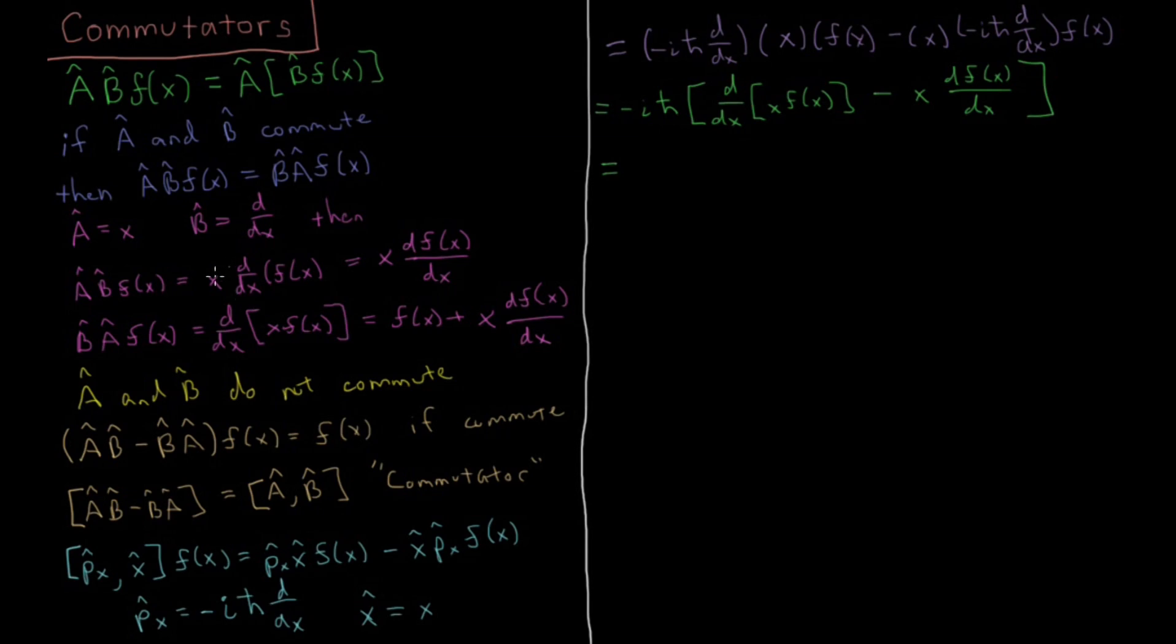Substituting in from what we saw earlier, if we have a differential operator acting on x times f of x, we get two terms. Carrying over our minus i h-bar, we get one term which is f of x, and then the other is x df/dx. Then subtracting out the remaining term from the other side, we have minus that same term. This term is the same as this term, so we can cancel those two out. So our result is that this eventually equals minus i h-bar f of x.